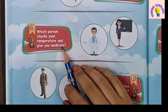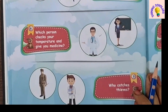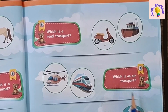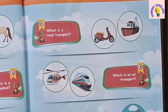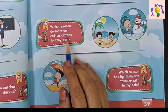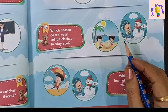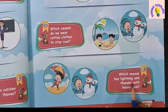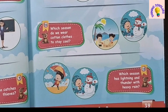Which person checks your temperature and gives you medicine? Doctor. Who catches thieves? Policeman. Which is a road transport? Scooter is a road transport. Which is an air transport? Helicopter is an air transport. Which season do we wear cotton clothes to stay cool? We wear cotton clothes in summer season. Which season has lightning and thunder with heavy rain? Rainy season.